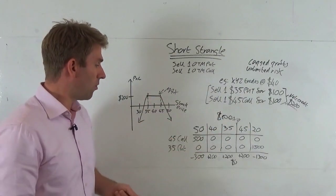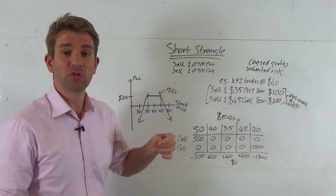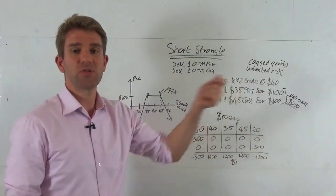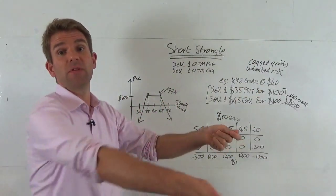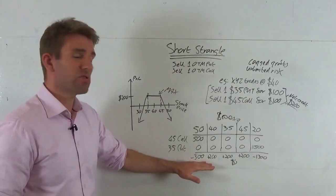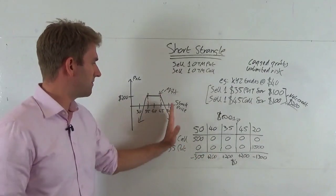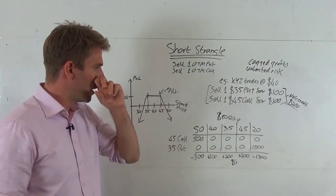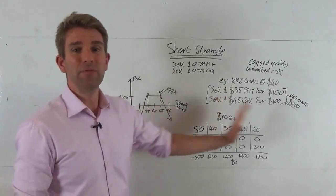Unfortunately we've had to pay out $400 for that call because we received $100, we have to pay $500 for the option, so we've paid out $400, received another $100 back from that put that expired worthless. It's not so bad but our loss is still $300 on that. So at $50 we lose $300.